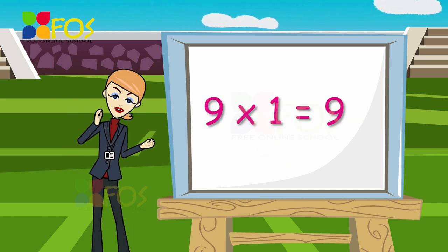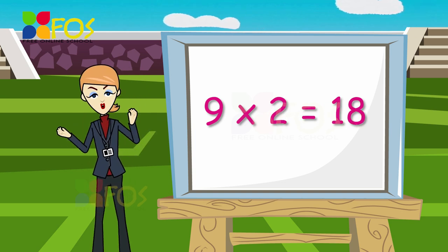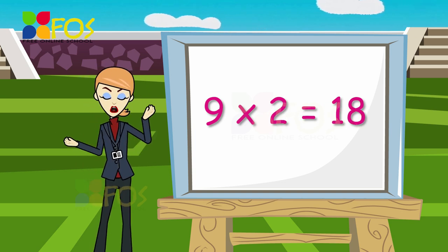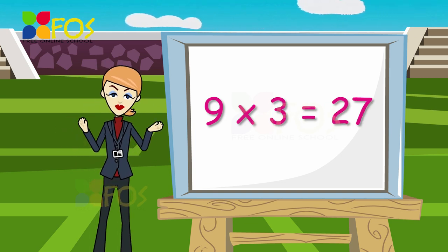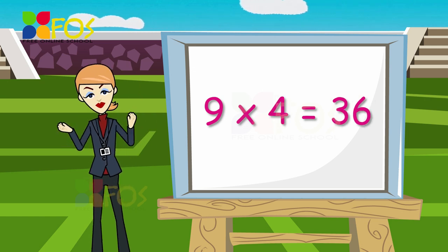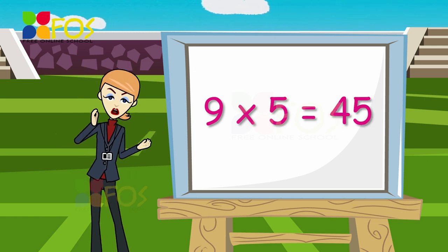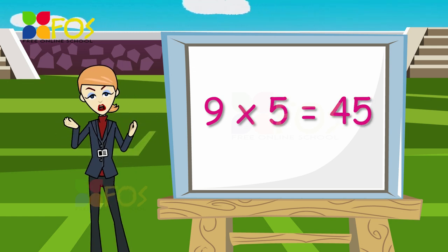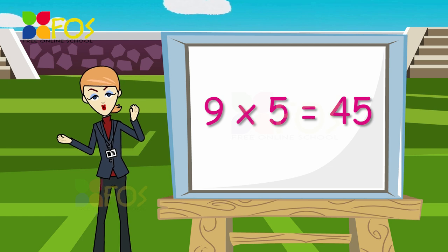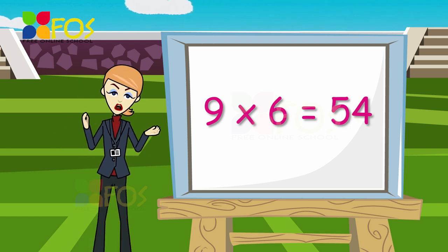Nine ones are nine. Nine twos are eighteen. Nine threes are twenty-seven. Nine fours are thirty-six. Nine fives are forty-five.